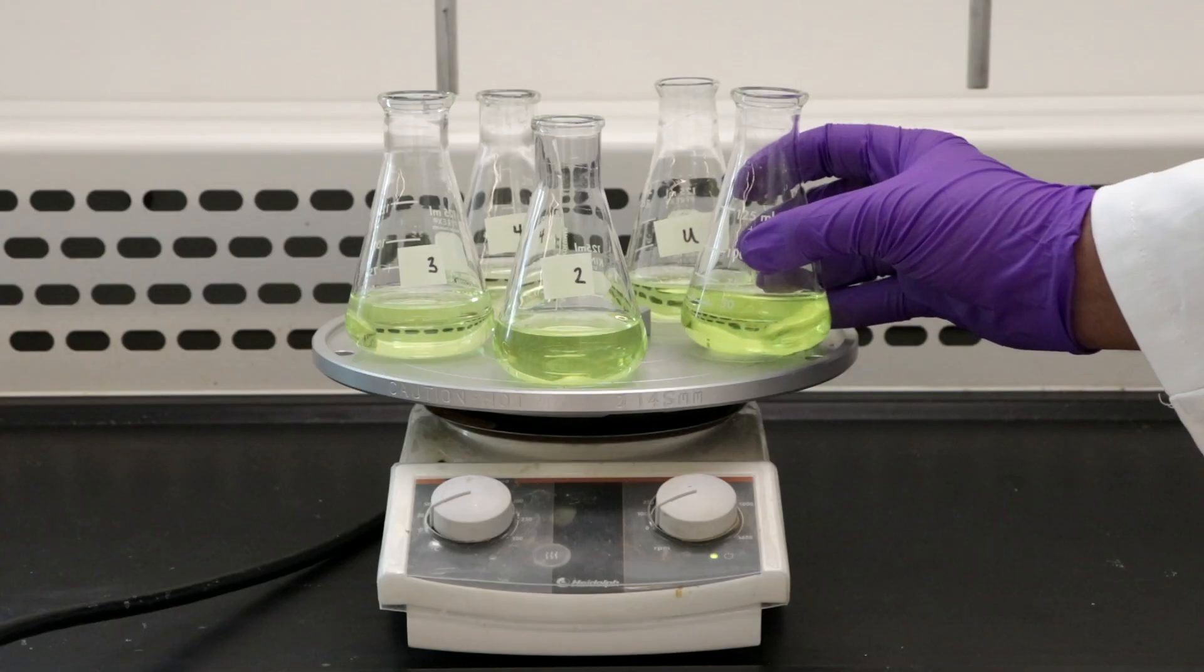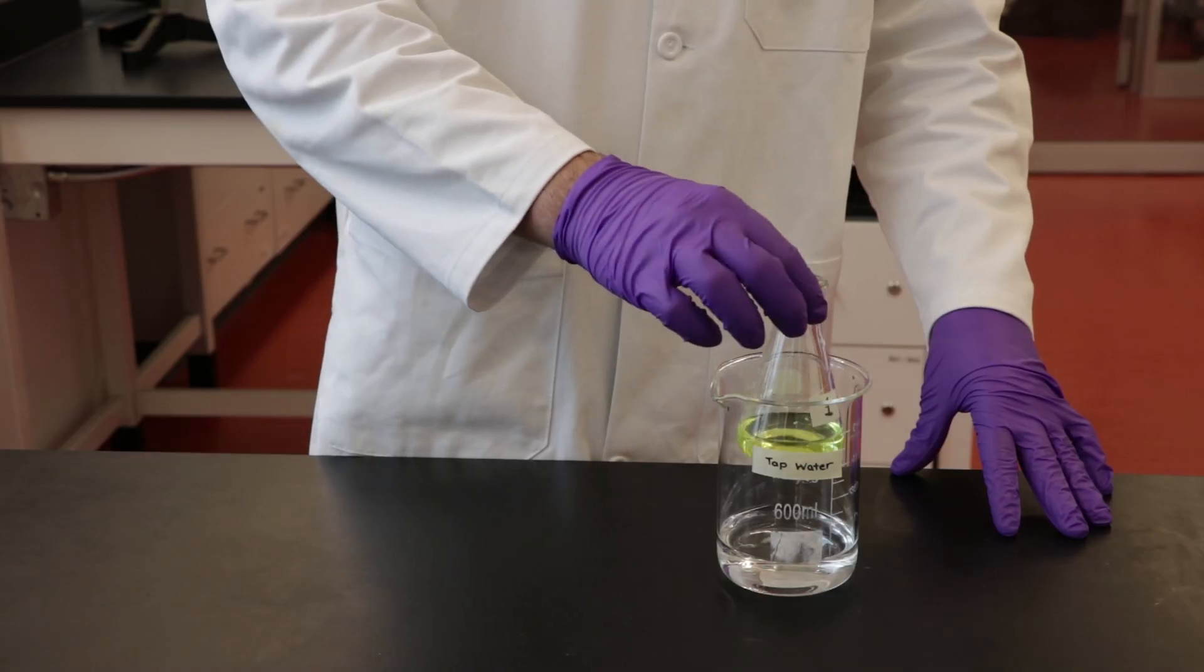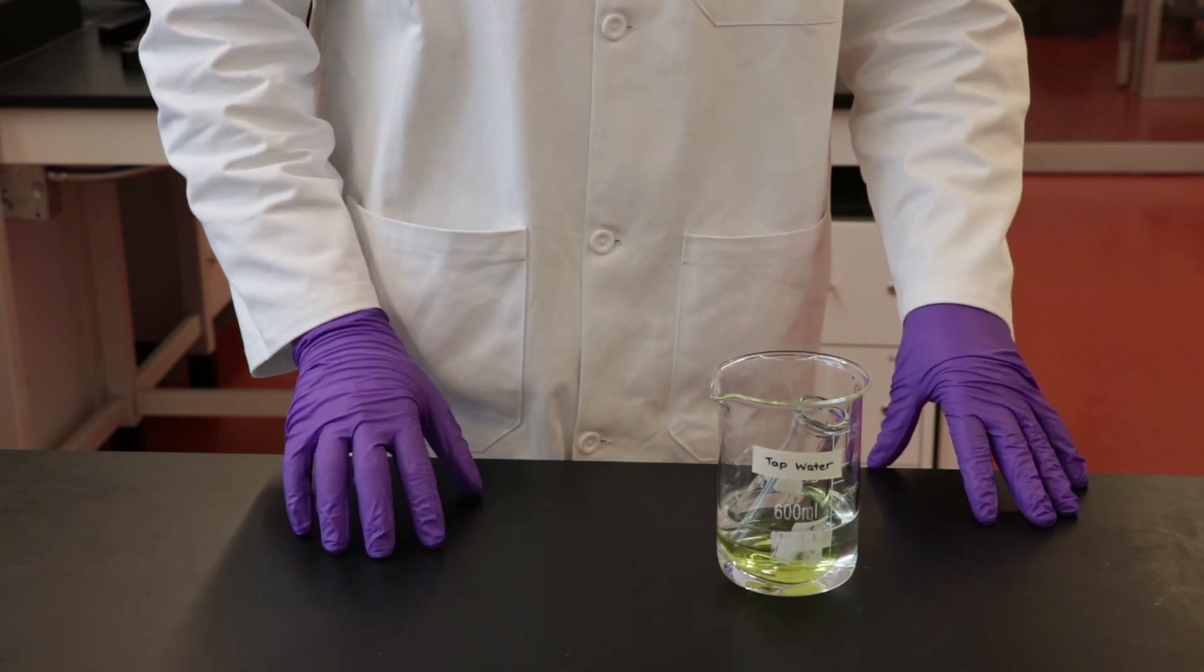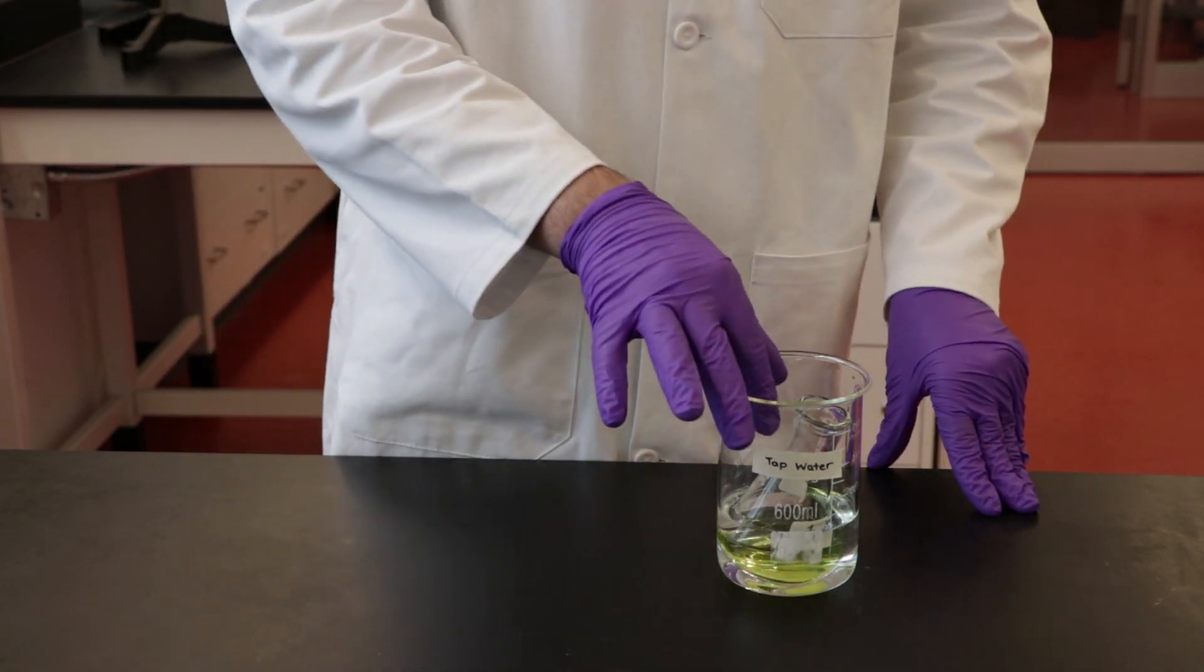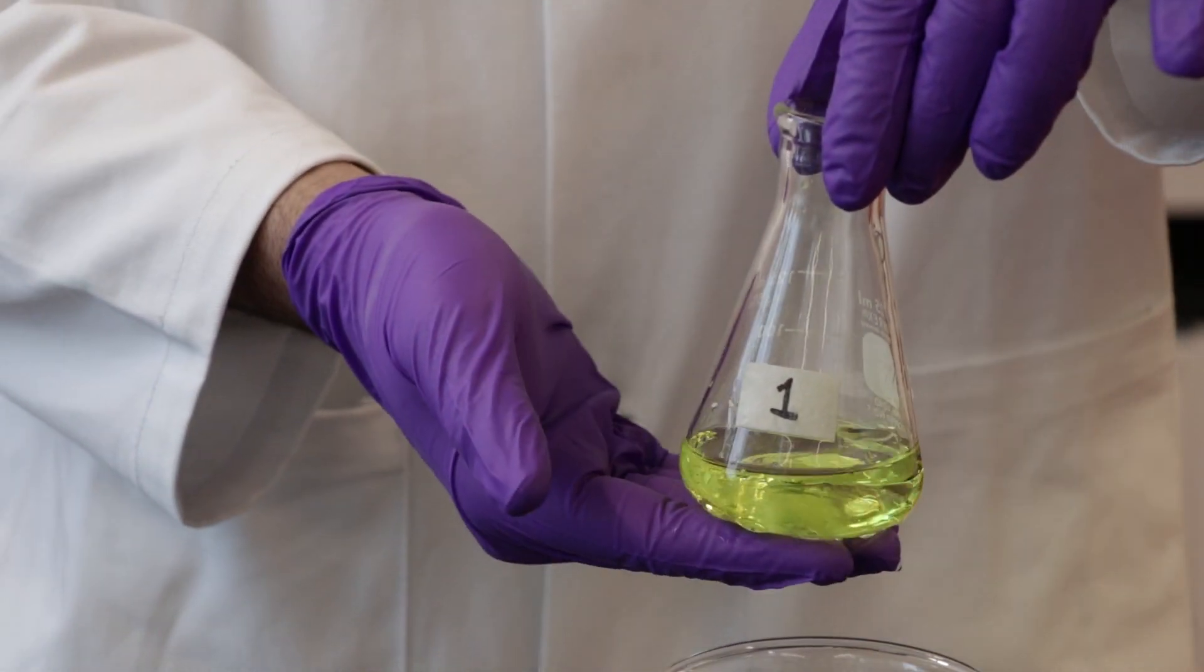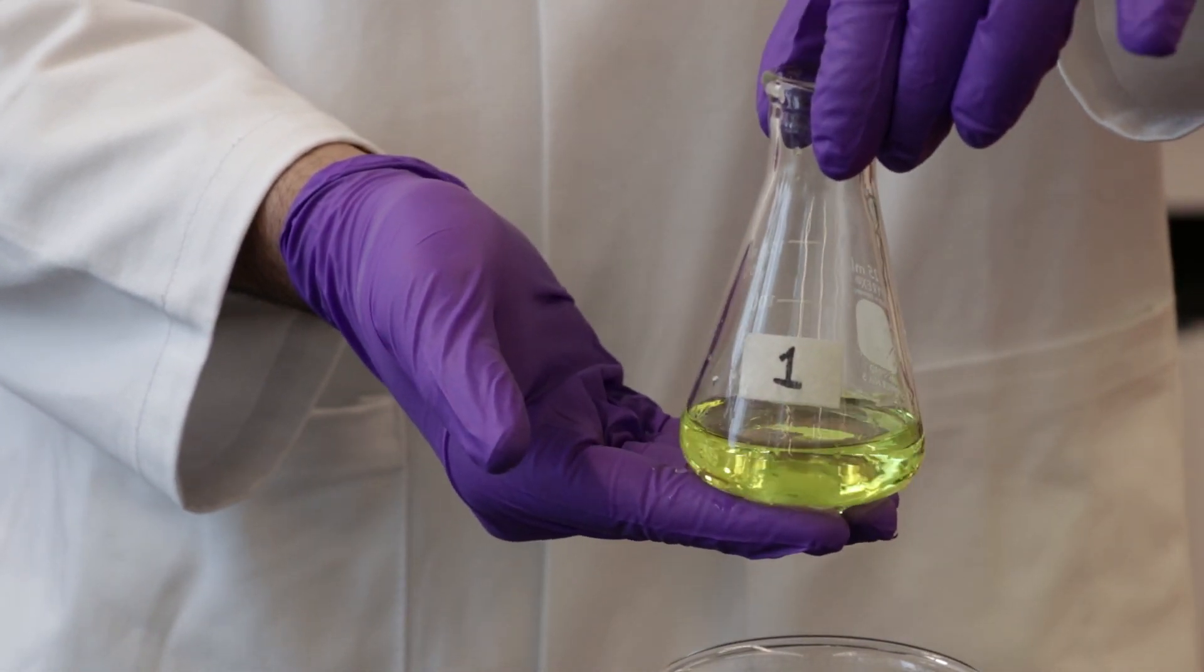After 15 minutes of simmering, remove the flasks from the hot plate and allow them to cool. This can be facilitated by placing the flask in a larger beaker with tap water. Once the flasks have cooled to the touch, you can move to the next step. You do not need a thermometer for this.